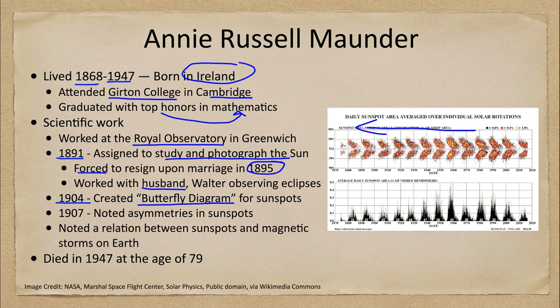The butterfly diagram tells us something about the sun, how its magnetic fields work, and how those form sunspots at different regions. This was one of the very early beginnings — done in 1904 — so we were just getting the beginnings of the idea of how sunspots formed. She was a pioneer in helping us better understand the cycles of the sun.